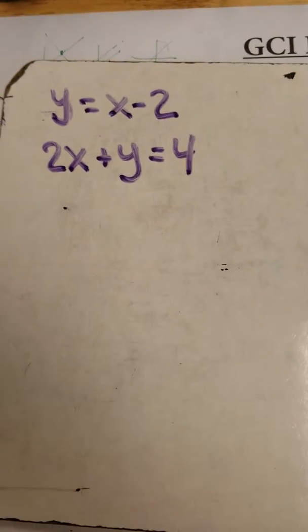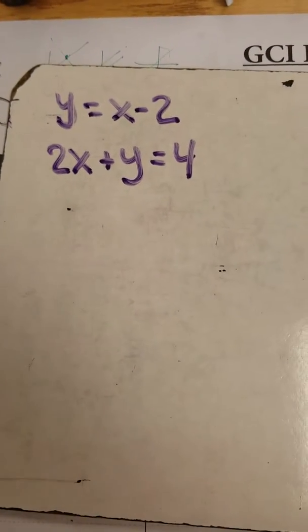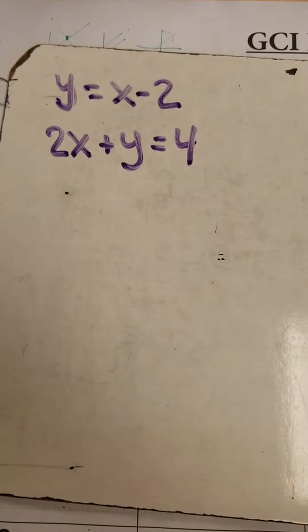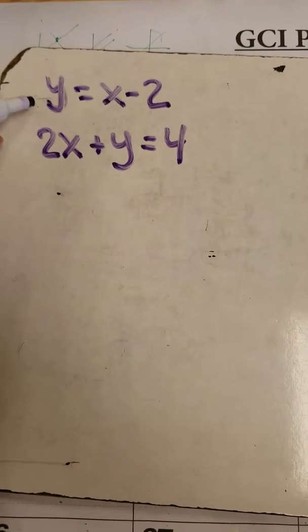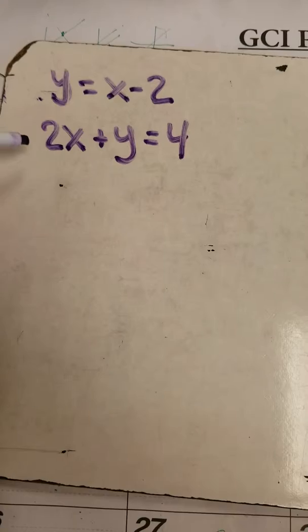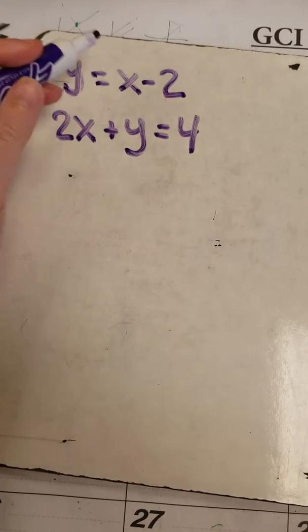All right, another solving for systems of equations by substitution situation you'll see is when you're given only one of these equations in slope-intercept form and you need to solve for the missing variables.